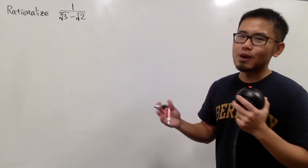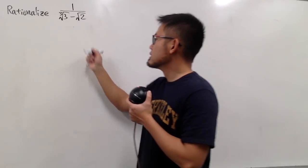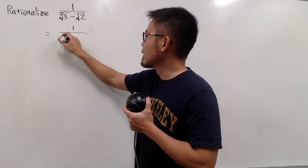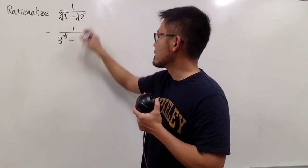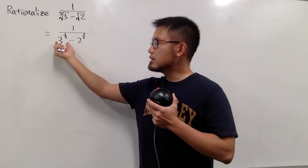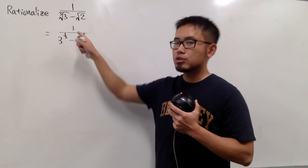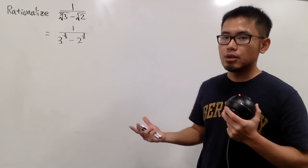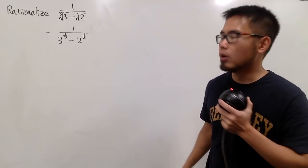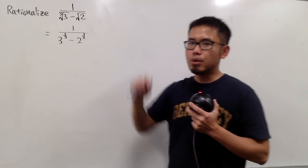First of all, let's look at the radicals in their fractional exponents form. This right here is going to be the same as 1 over — the cube root is the same as 3 to the 1/3 power, and then the square root is the same as 2 to the 1/2 power. The idea is that I wish to raise these to a power so that I don't get any fractional exponents in the denominator anymore. I need to look for the lowest common multiple of 3 and 2, namely the denominators of the fractional exponents.